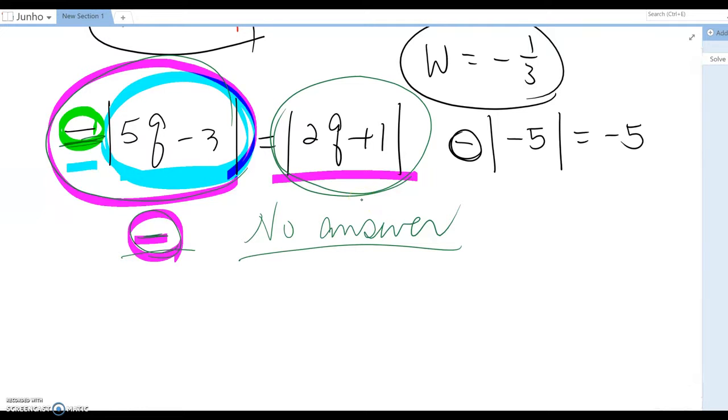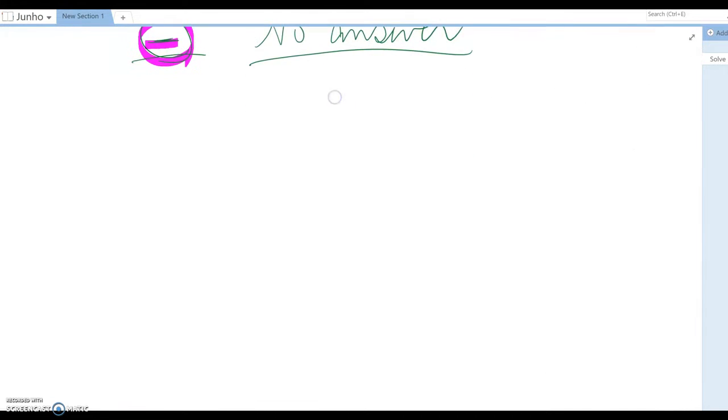Now one last question which is a little bit hard, which is this one: |6x - 3| = x - 2.